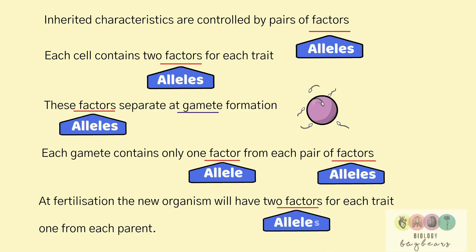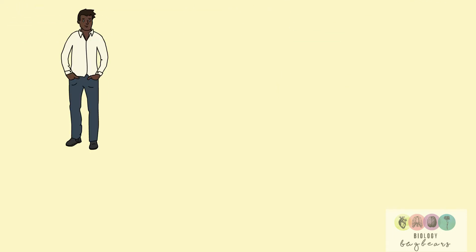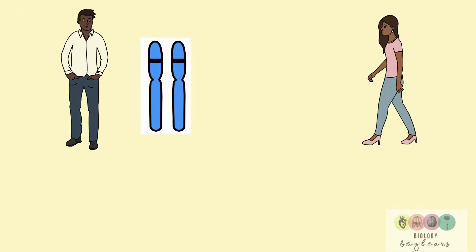And that is the law of segregation. Inherited characteristics are controlled by pairs of factors or alleles. Let's take for example eye color.